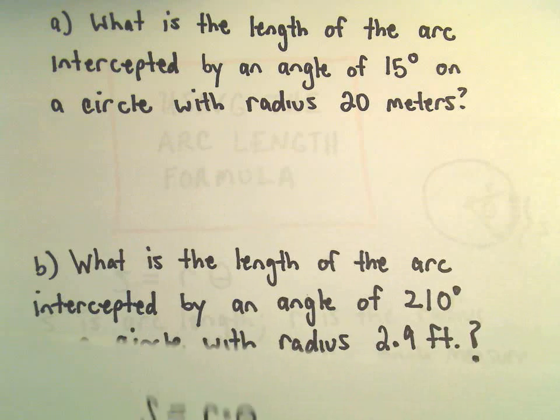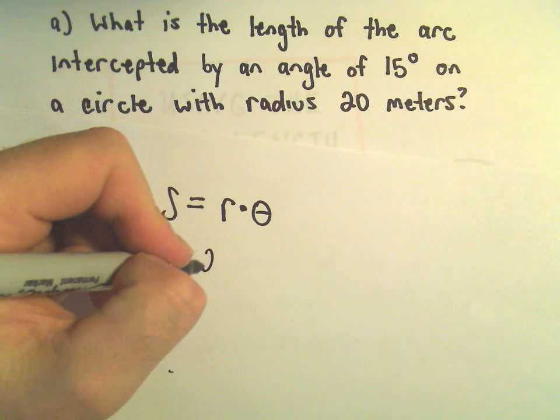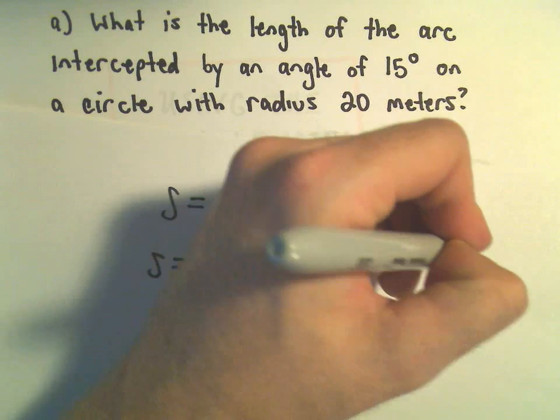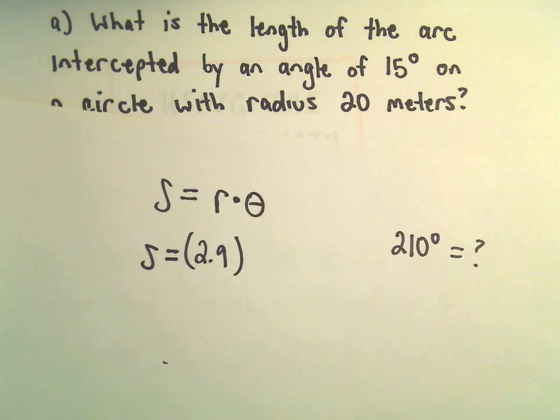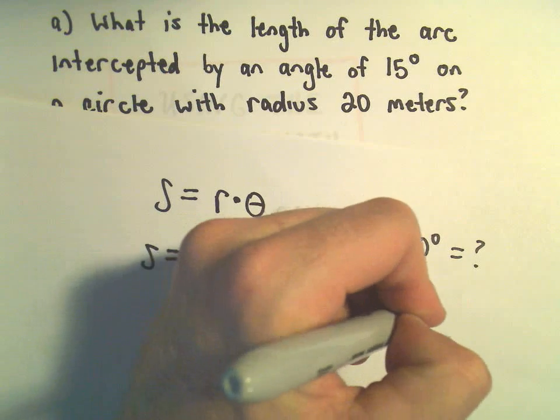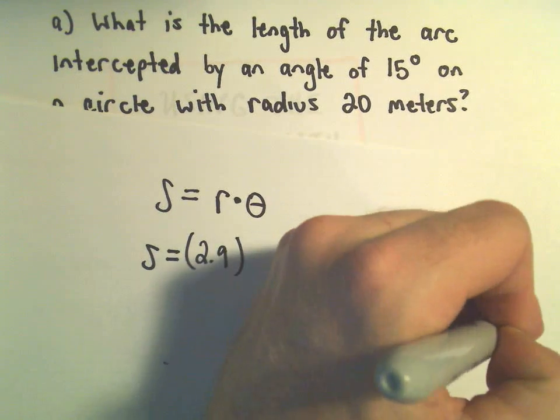Again, our radius in this case was given to be 2.9 feet. But same thing, we have to convert 210 degrees into radians, so we saw that pi over 180 radians was the same thing as 1 degree.